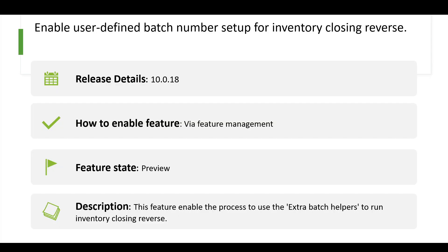This next feature is aligned with the previous one — it's about how to run the inventory closing reverse in multi-threading. In App 10.0.18, a feature was released to use extra batch helpers to run the inventory closing reverse. From feature management, you can enable the feature called 'Enable user defined batch number setup for inventory closing reverse.' After enabling this feature, you can run the inventory closing reverse in multi-threading, just like the normal inventory closing or recalculation process.